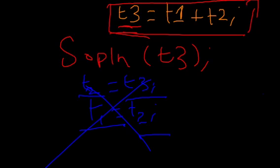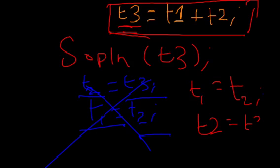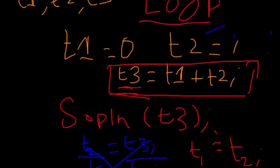What you do instead is you set t1 equal to t2 first, and then t2 equal to t3. And this is where your loop ends.